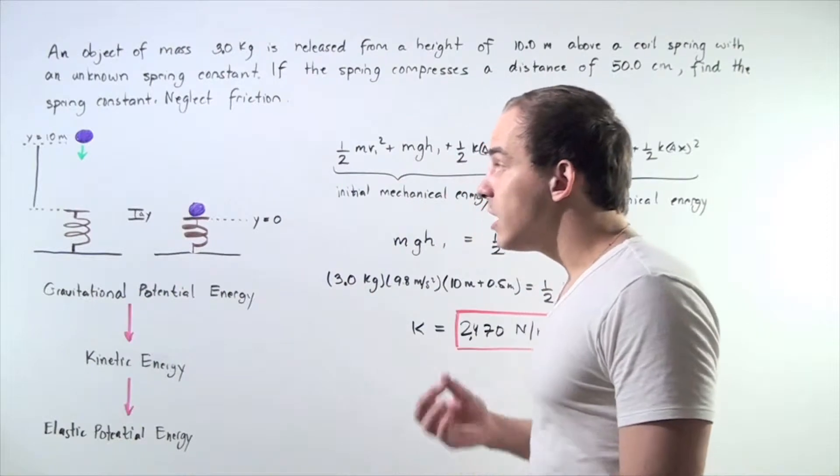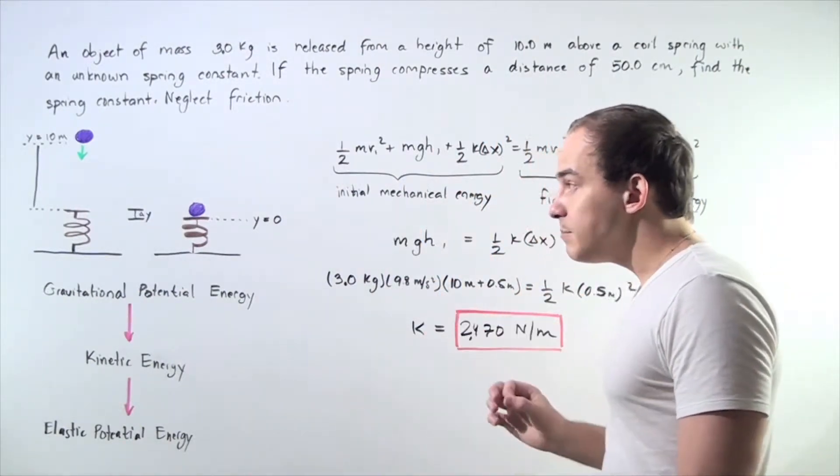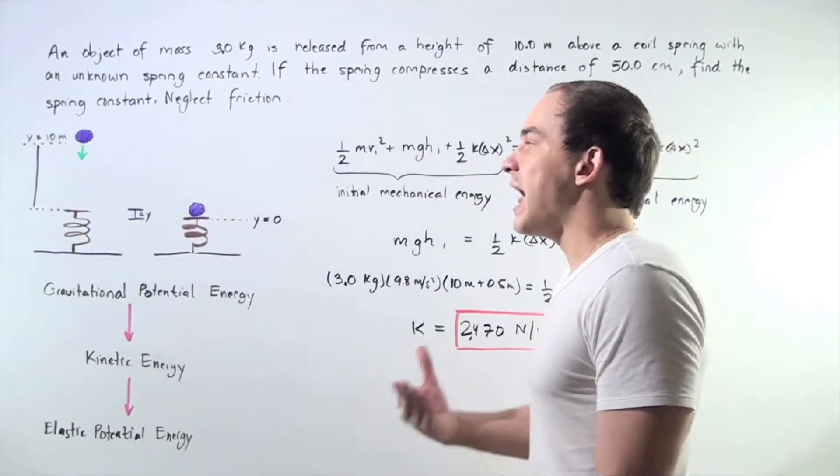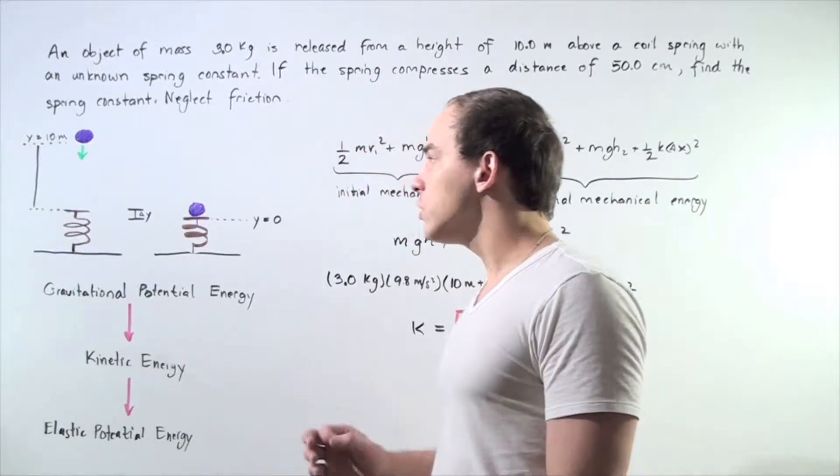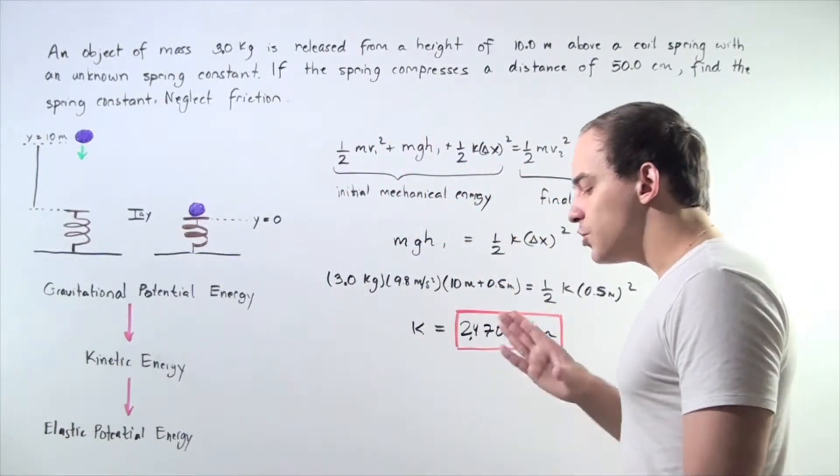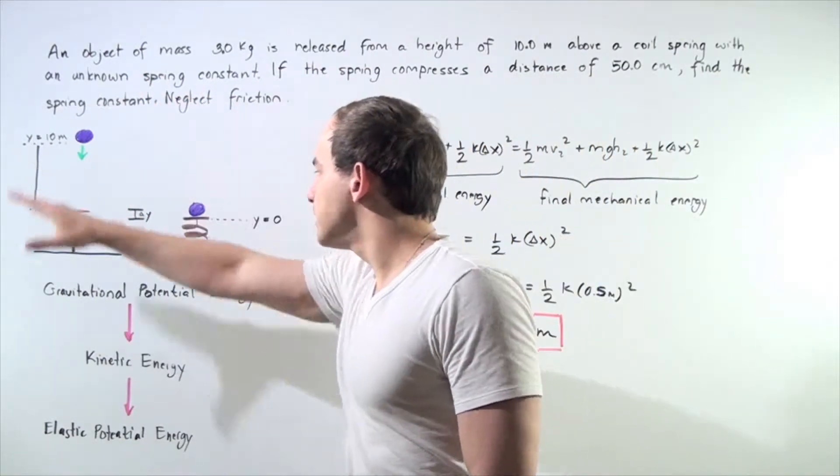So that means because only conservative forces are acting on that object, our total mechanical energy of the system remains constant. Our total mechanical energy is conserved. So using that information, let's begin by drawing our diagram.